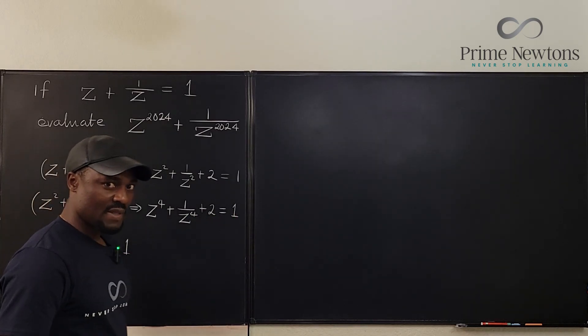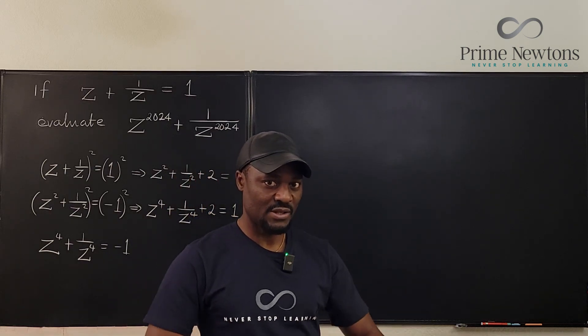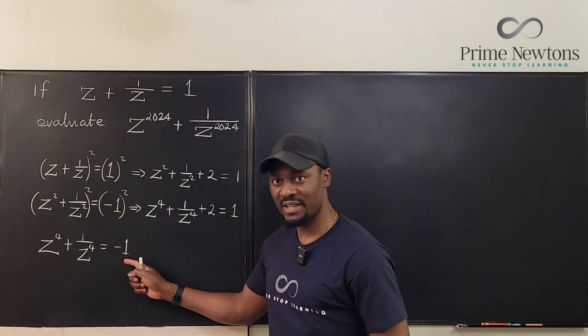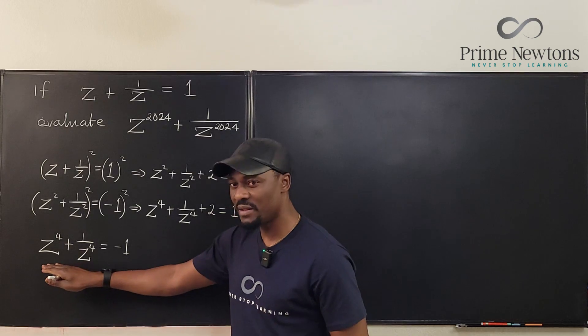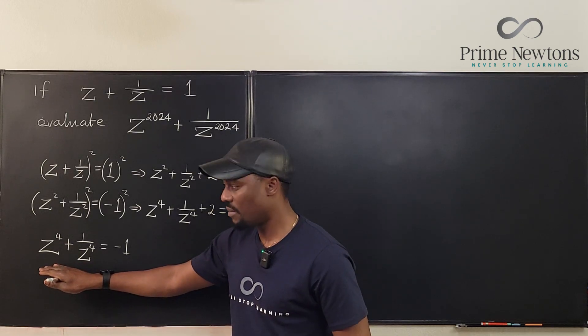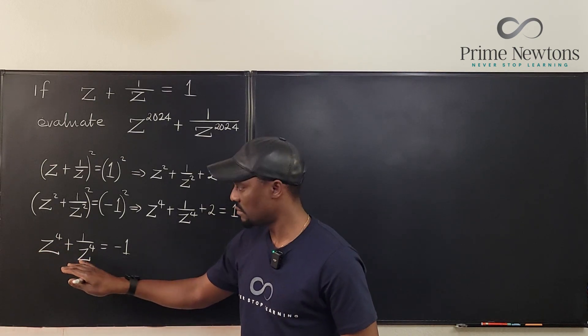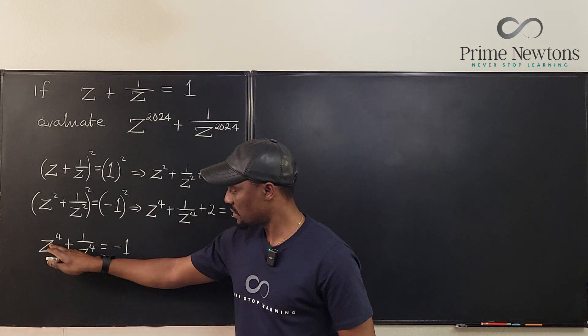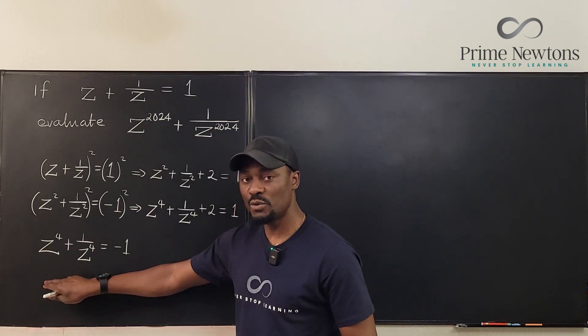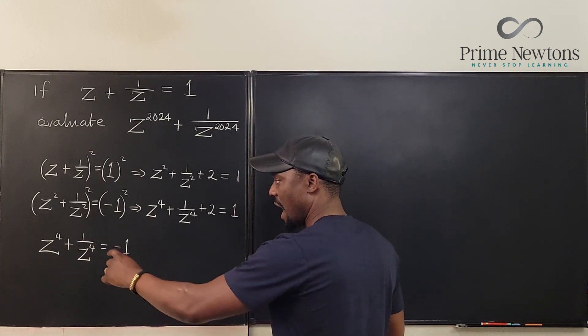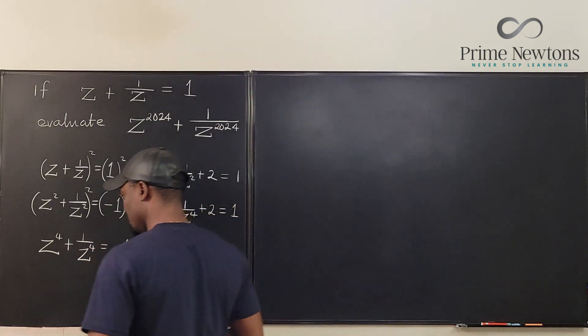So you notice, as long as we keep squaring and squaring and squaring, we're going to keep getting negative 1. If we square this again, when we square this, what would it become? Z to the eighth, it would be minus 1. So you notice that I can actually create a pattern here.